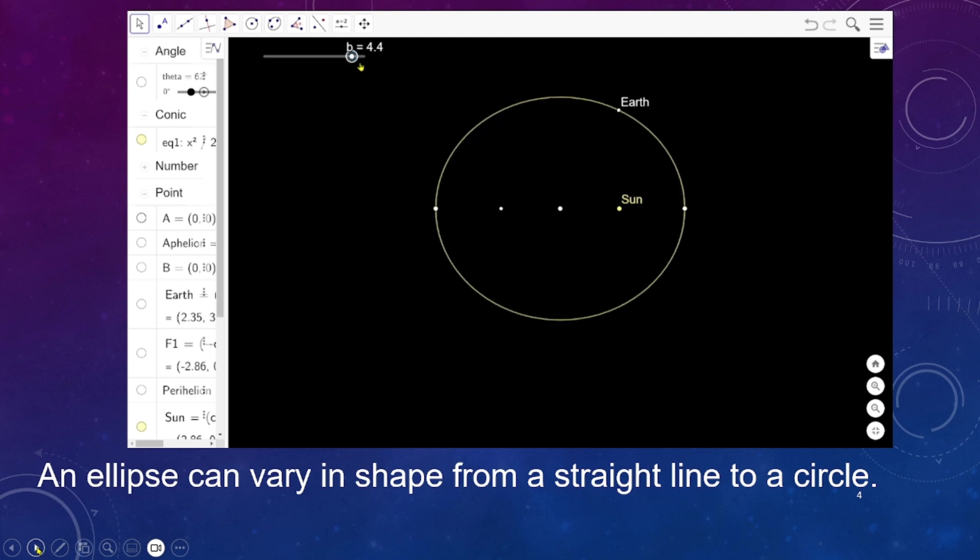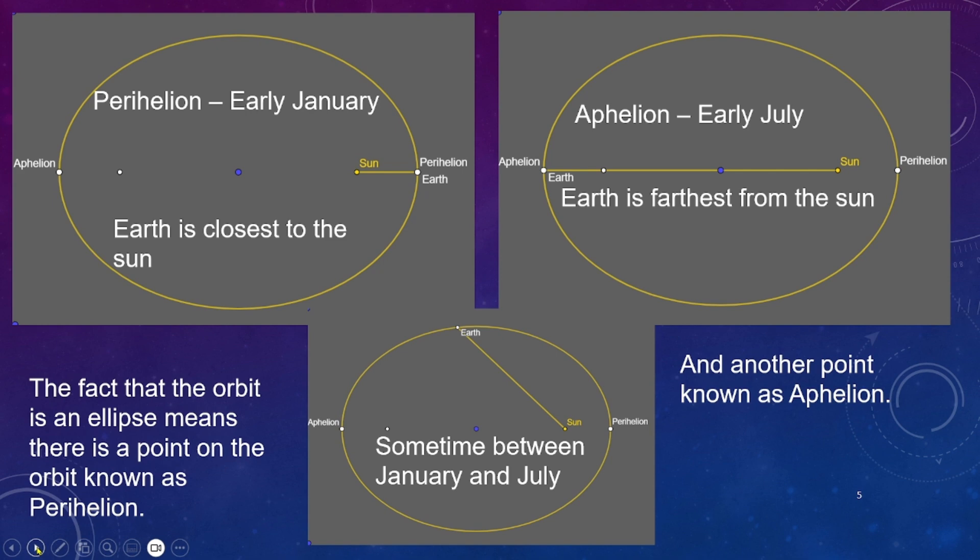An ellipse can vary in shape from a straight line all the way to a circle. This gives rise to two phenomena known as the perihelion and the aphelion. The perihelion is when the Earth is closest to the Sun and the aphelion is when it's farthest away.